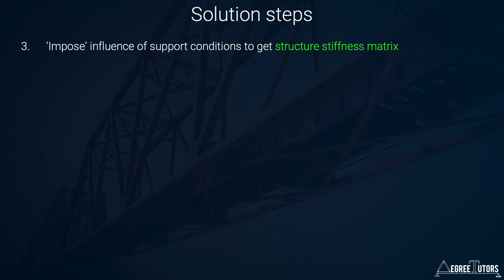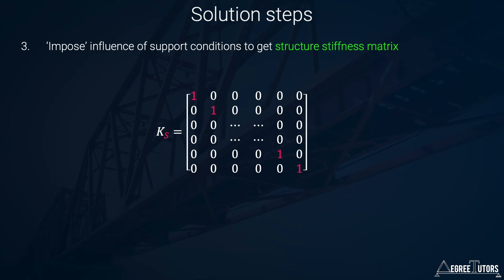Step three is to take the primary stiffness matrix and impose knowledge of our support conditions — also termed boundary conditions — onto it. We know what's happening at the boundaries, and typically the displacement there is equal to zero. We impose this knowledge on the primary stiffness matrix to obtain what's called the structure stiffness matrix.